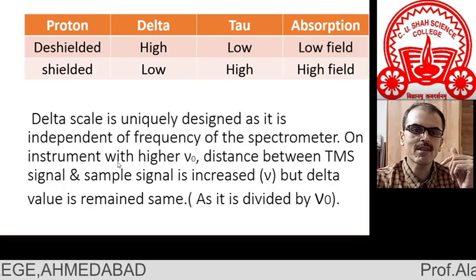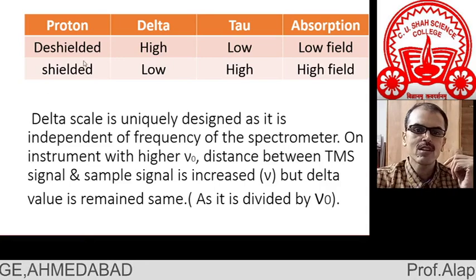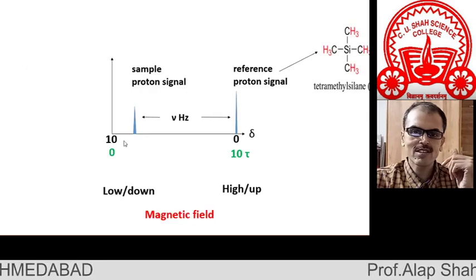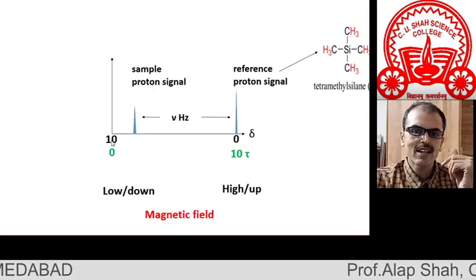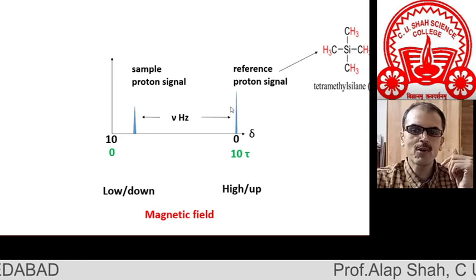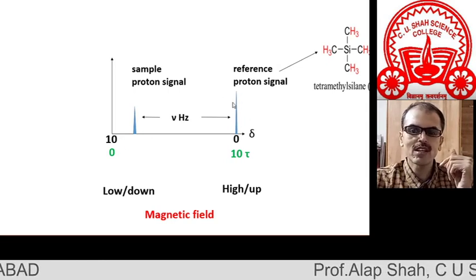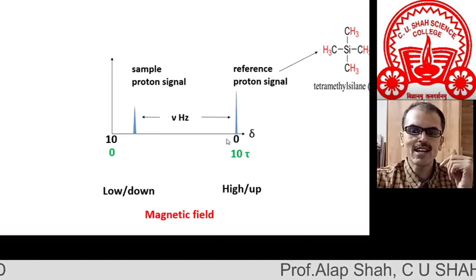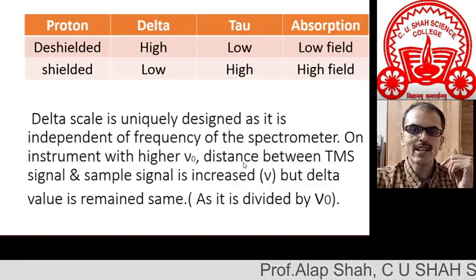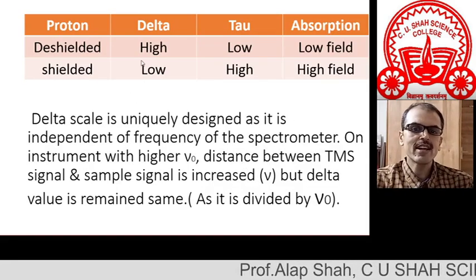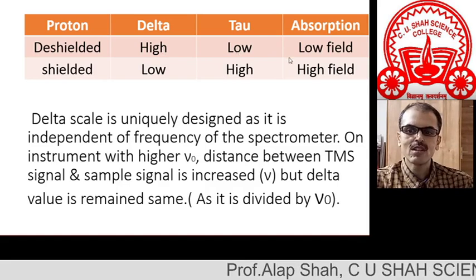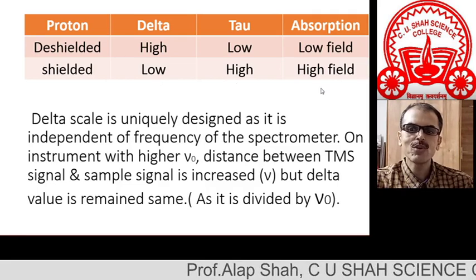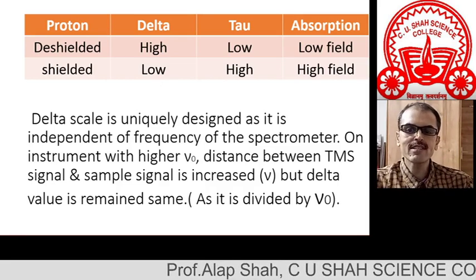Here is a summary: deshielded protons fall into the low field — in the low field, delta is high and tau is low. Shielded protons fall into the high field — delta is lower and tau is high. So the table summarizes: deshielded means high delta, low tau, low field absorption; shielded means low delta value, high tau value, high field absorption.